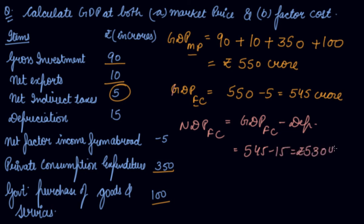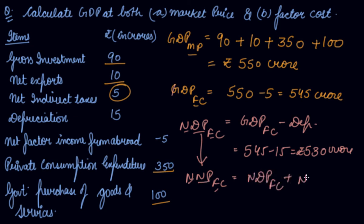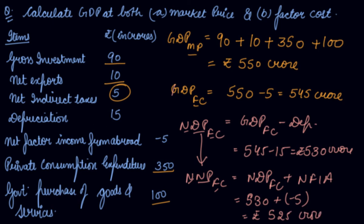To find NNP at FC, you move from domestic product to national product by adding net factor income from abroad. So NDP at FC plus net factor income from abroad: 530 + (−5) = rupees 525 crore. NNP at FC is your national income.